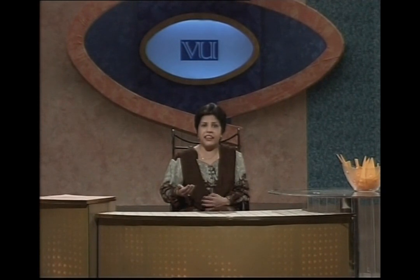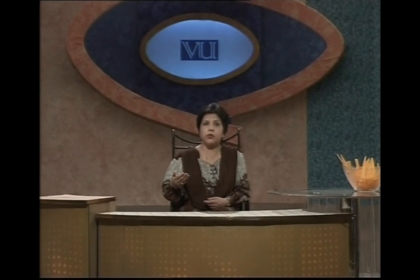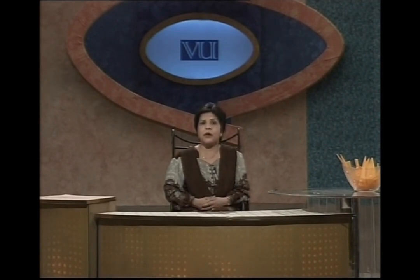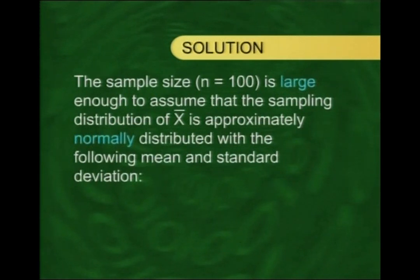You have seen how interesting this problem is. We are assuming the actual figures are the same as the employees claim. But if the government draws a sample of size 100 and the average salary exceeds 24,500, then the government may consider the demand unfounded. The sample size of 100 is large enough to assume that the sampling distribution of x-bar is approximately normally distributed, with mean and standard deviation as follows.